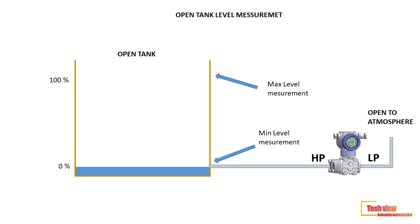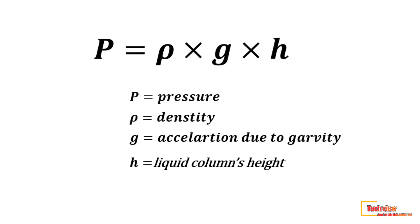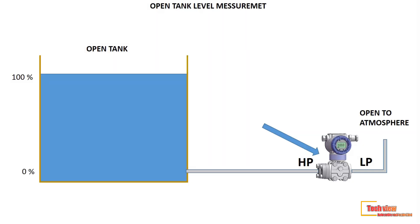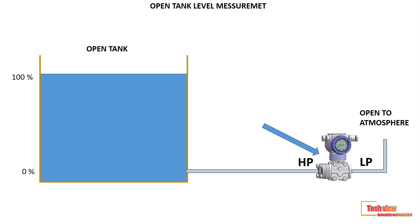The DP level transmitter measures level based on the Pascal equation for hydrostatic pressure: pressure equals the liquid's density times acceleration due to gravity times the liquid column's height. The transmitter only reads hydrostatic pressure from the bottom of the tank, so to convert this to level we must configure the transmitter to find the zero level and span level.